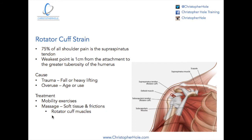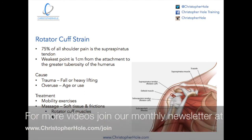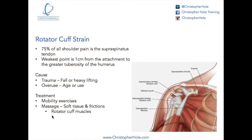A quick summary: it's a common injury of the supraspinatus tendon — the rotator cuff on top of the shoulder. The weakest point is the first centimeter of the attachment. There are two causes: traumatic (heavy lift or fall) or overuse (age or repetitive use). Treatment involves mobility exercises, massage using effleurage, petrissage and frictions, and then functional stability exercises of the shoulder. Many thanks for watching — my name is Chris from ChristopherHole.com.